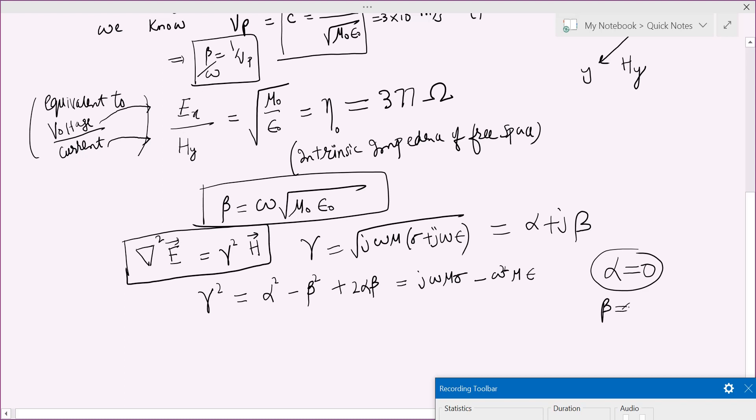Because beta cannot be zero. See, if alpha and beta both are zero, then gamma is zero. But why alpha should be zero? Because this is the imaginary term. The imaginary term has to be zero. So what is left to us is this minus beta squared is minus omega squared mu epsilon, or beta squared is omega squared mu epsilon. So you again get the same thing.